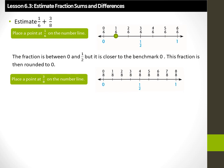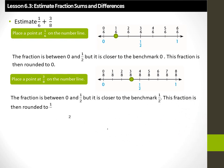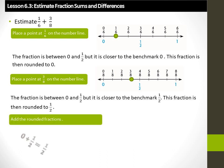Place a point at 3 over 8 on the number line. The fraction is between 0 and half, but it is closer to the benchmark half. This fraction is then rounded to half. Add the rounded fractions: 0 plus half is equal to half.